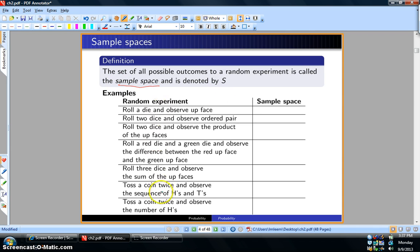We have a bunch of random experiments on the left and we're going to fill in the sample spaces on the right. Roll a die and observe the up face. In this case, the sample space is simply one through six.